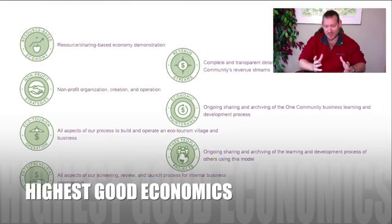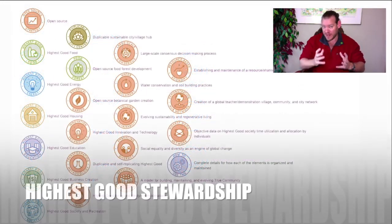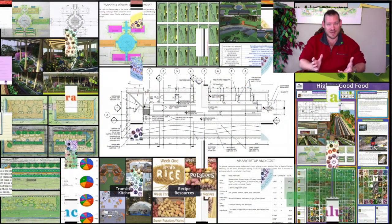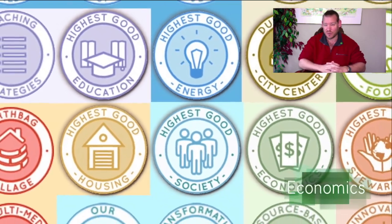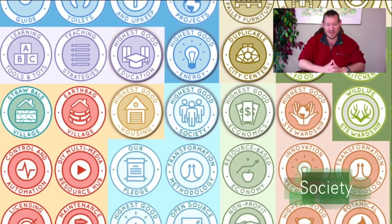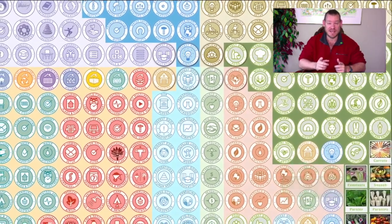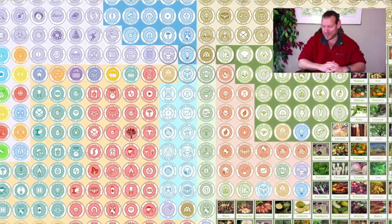Open source community ecology models are one way to do that, and we're creating the blueprints, tools, tutorials, and do-it-yourself instructions to build them. One Community is a place that people can come visit and experience; if they like what we're creating, they can take any aspect of it or all of it and build their own self-replicating teacher demonstration community, village, city, or hub. This is what our all-volunteer, 100% unpaid non-profit team is creating — we're creating this because we want to live this way and because we want other people to as well. Here is one week of our team's progress and accomplishments creating open source community ecology models for the benefit of all people and all life on this planet.